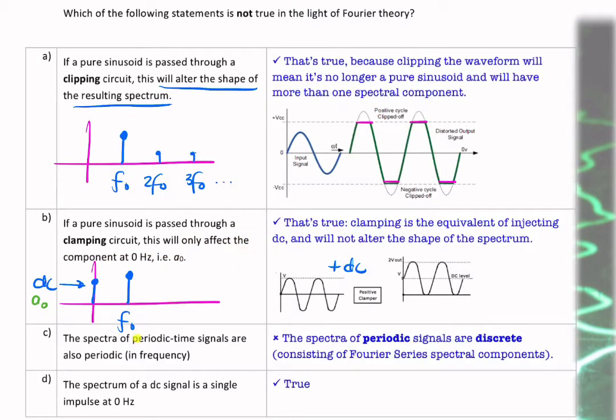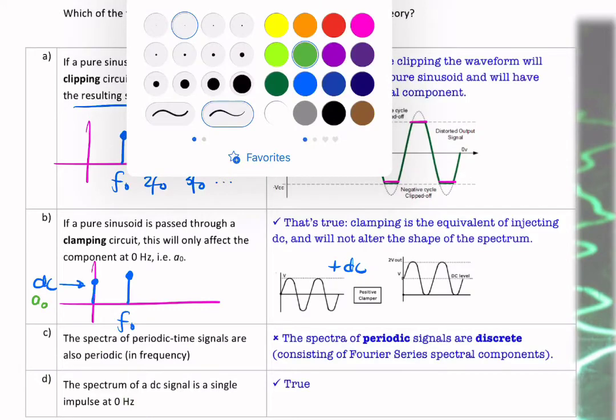Part C. The spectra of periodic time signals are also periodic in frequency. Again, the spectra of a periodic time signal is periodic in frequency. So if I had a periodic time signal like that, will its spectrum be periodic?